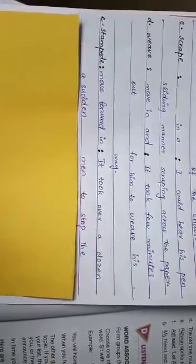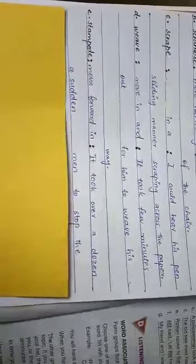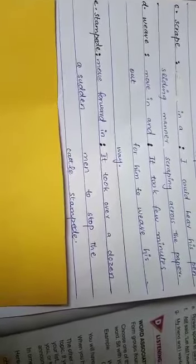Stampede. Move forward in a sudden, achanak se aage barna. It took over a dozen men to stop the cattle stampede. Aage barhte hoi moveishy ko rokne ke liye ek darjan aatmi ya atmiyone aage barhte hoi moveishy ko roka.